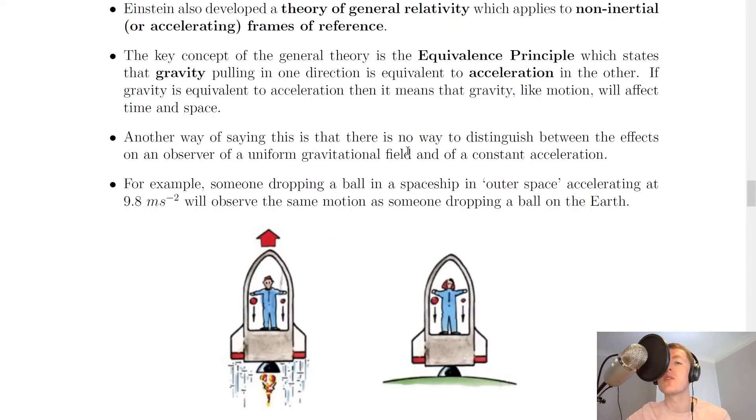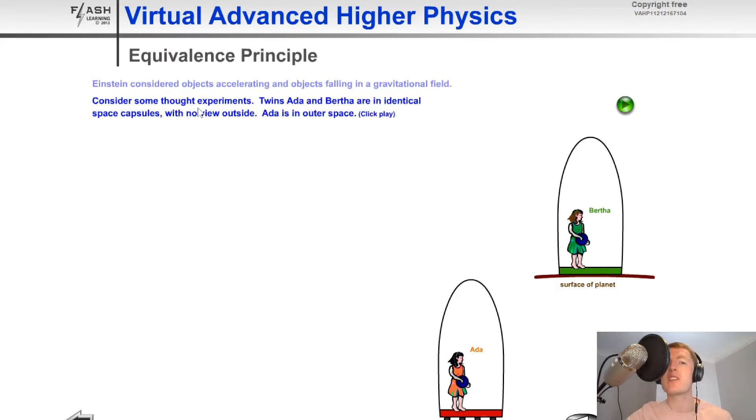Now to help you visualize something called the equivalence principle, I'm going to show you an animation. So we're going to consider some thought experiments here, and it says that twins Ada and Bertha are in identical space capsules with no view of outside. Ada is in outer space. So here we've got Ada in outer space, and we've got Bertha on the surface of the planet. And if we click play here,